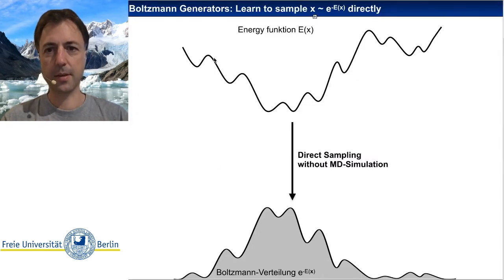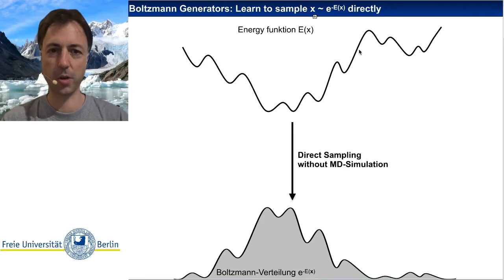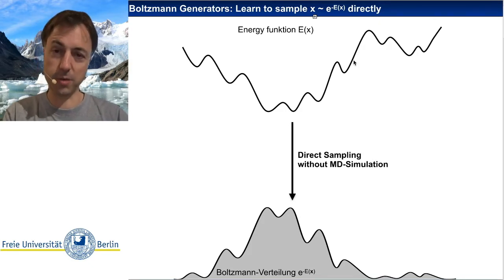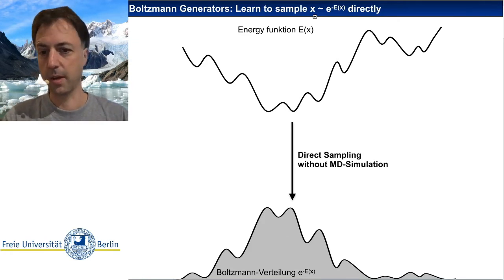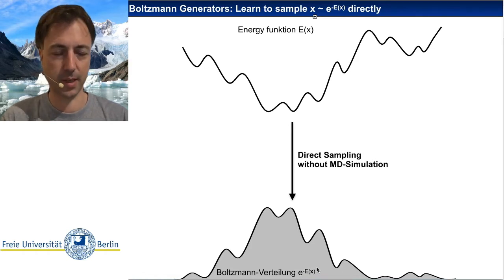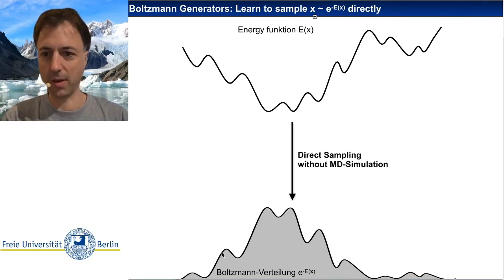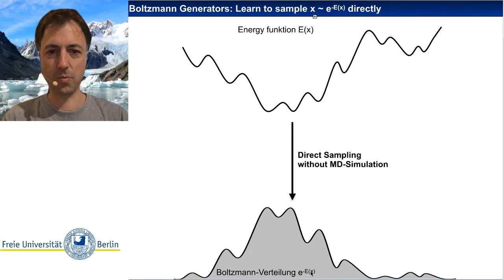The idea is that since the system we want to sample is defined via an energy function — which models our molecular states and tells us in principle how probable these states are — if we combine the energy function together with the definition of the thermodynamic ensemble, such as the canonical ensemble, we have a Boltzmann distribution: e to the minus energy divided by kT. Every state X that we can probe has a known probability density; it's just difficult to actually explore the space and sample it. Can we do this more directly with machine learning?